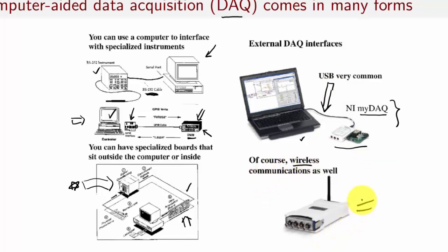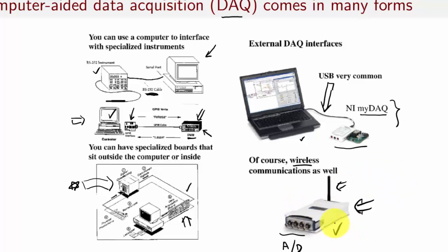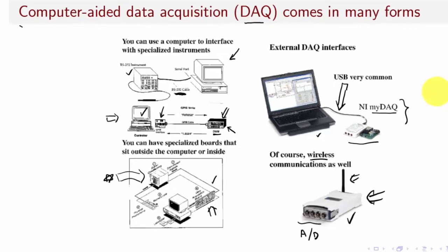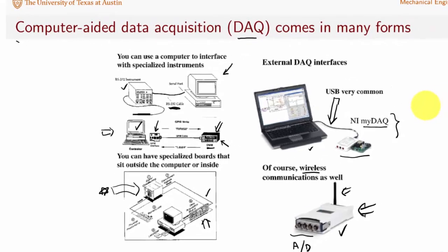This is an example of an NI device that has about four different analog inputs. It has A-to-D converters — maybe fast A-to-D — and you can see it has a wireless interface to a computer. This device collects and stores a lot of data and then transmits it wirelessly to a computer. So there are a lot of different ways to have data acquisition working on your computer.